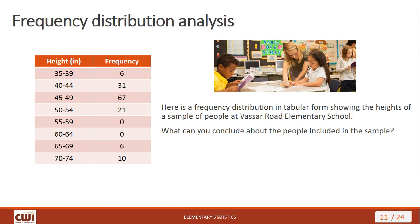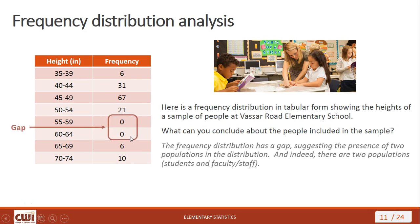Here's a frequency distribution showing the heights of a sample of people at Vassar Road Elementary School. You can see two distinct populations with a gap separating them in the middle. What explains the two populations? The data represents people at an elementary school — one population is really short (the kids), and another population is much taller (the adults: faculty and staff). Looking at the data and identifying gaps in the shape of your distribution can actually indicate characteristics of the distribution itself and the data used to form it.